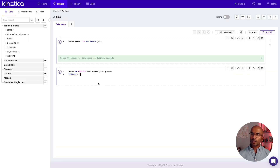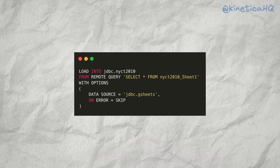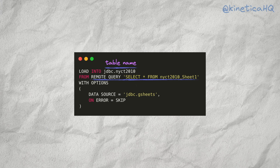Now let's head over to Workbench to create this data source. All we need to do here is specify the connection string. Now that the data source is registered, we can start loading data from it. The general pattern for loading data from any JDBC data source is as follows: you specify the name of the table that you would like to load the data into, and then you express the remote query that would be issued against that data source to get the specific table that you would like to load into Kinetica. In this case, we would like to load all of the data from Sheet 1 in the NYCT 2010 spreadsheet. Also note the specific syntax here, which is the name of the spreadsheet followed by the sheet name.